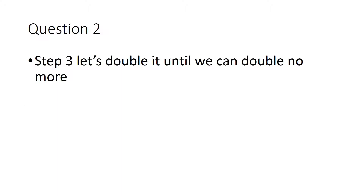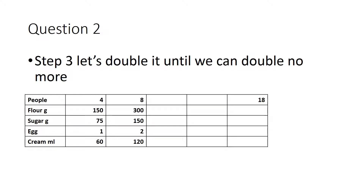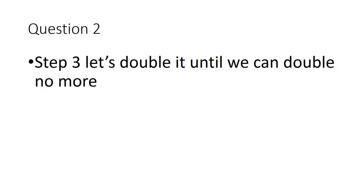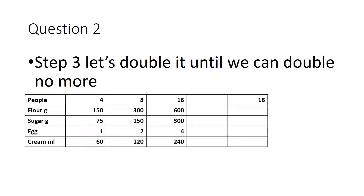Now we're going to double up until we can double no more. Do your first double and put those numbers in your ratio table. We can still double again — double of 8 is 16, so let's get that in. Double up again. We've now gone from 4 to 16, so we're nearly there. You could also have gone straight to multiplying by 4 to get to 16 and save yourself a step, but just doubling up is nice and easy.